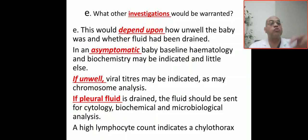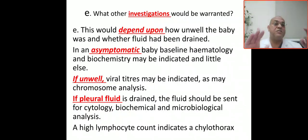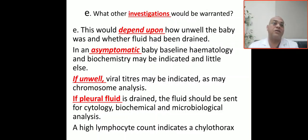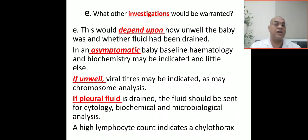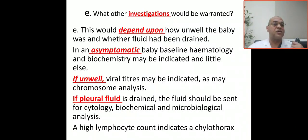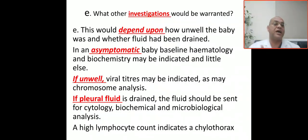If the baby becomes unwell, this suggests associated causes. You must take viral titers for congenital infections, chromosomal analysis for chromosomal abnormalities, imaging studies if structural abnormalities are found, and karyotyping for chromosomal causes. If the pleural fluid has been drained because the patient was symptomatic, the fluid should be sent for analysis.